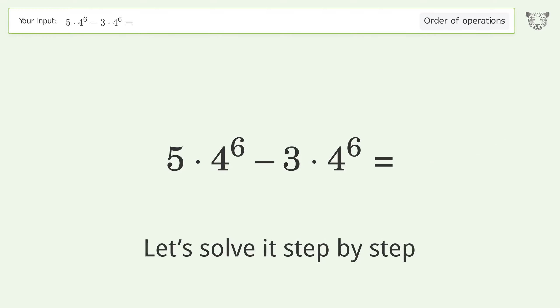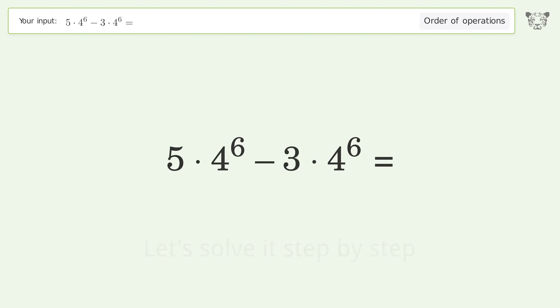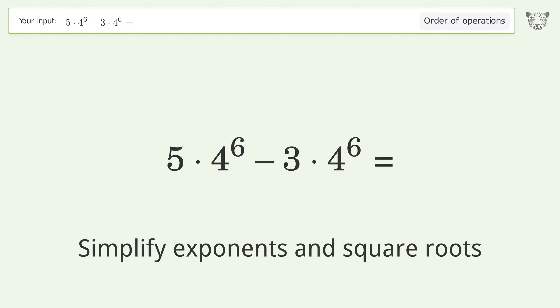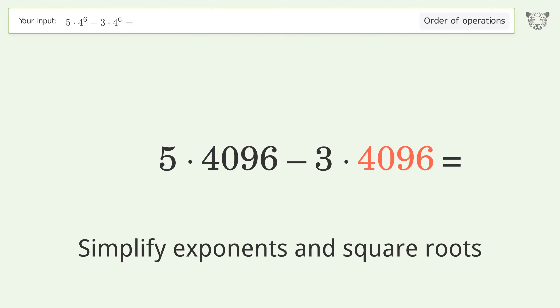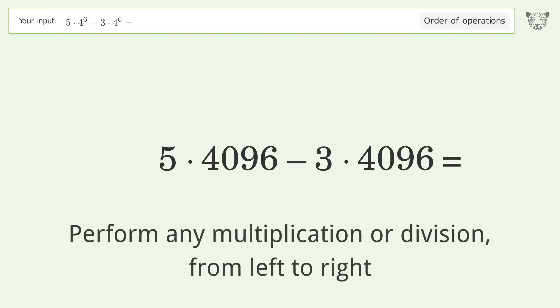Let's solve it step by step. First, simplify exponents and square roots. 4 to the power of 6 equals 4096. Next, perform any multiplication or division from left to right.